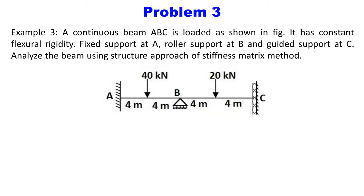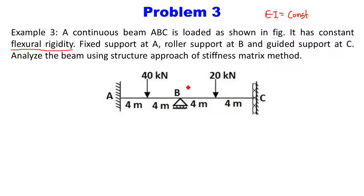The problem statement: a continuous beam ABC is loaded as shown in the figure. It has constant flexural rigidity, meaning EI is constant. There is a fixed support at A, a roller support at B, and a guided support at C. The left support is fixed, the middle support is a roller, and the end support at C is a guided support, also called a slider.